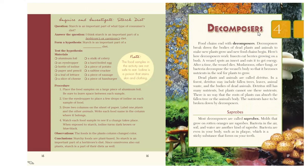Next up, the third major group in a food chain or food web: the decomposers. Food chains end with decomposers. Decomposers break down the bodies of dead plants and animals to make new plants grow and new food chains begin. Here's how decomposers work: insects eat berries growing on a bush; a weasel spots an insect and eats it; after a time, the weasel dies. Mushrooms and other fungi or bacteria decompose the weasel's body — breaking it down so it becomes nutrients in the soil for plants to grow.